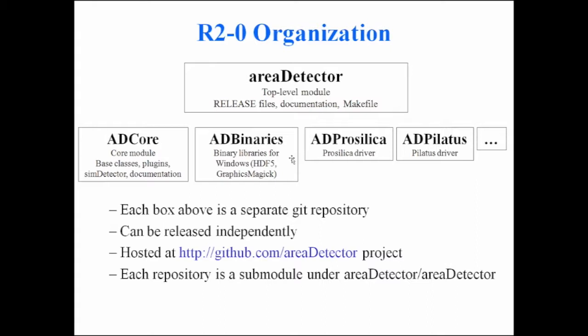For example, Point Grey provides a shared library that won't work on Enterprise Linux 6, so you can't run it on a standard APS Linux computer. Each of these boxes, including the top-level one, is a separate Git repository. The nice thing about breaking it up this way is that each can be released independently — when there's a new plugin available, we can release a new version of ADCore even if we're not ready to release a new version of ADProSilica or the Pilatus driver. It's all hosted at github.com/areadetector.